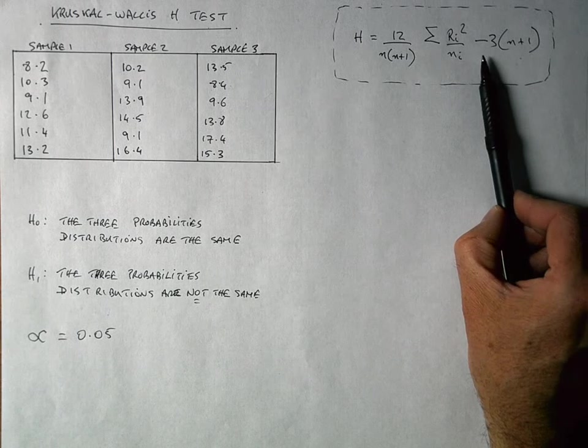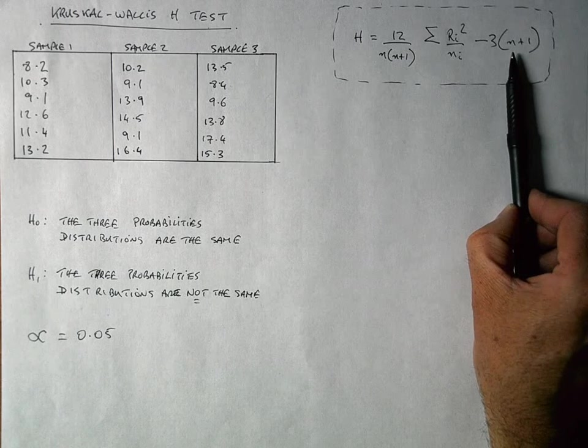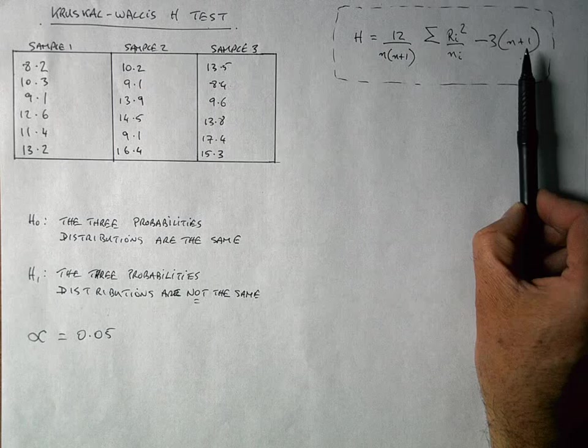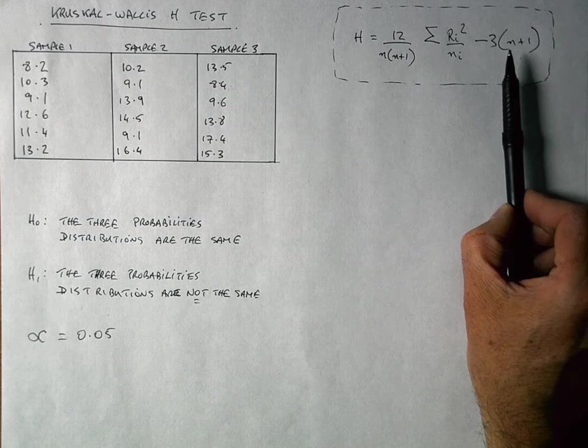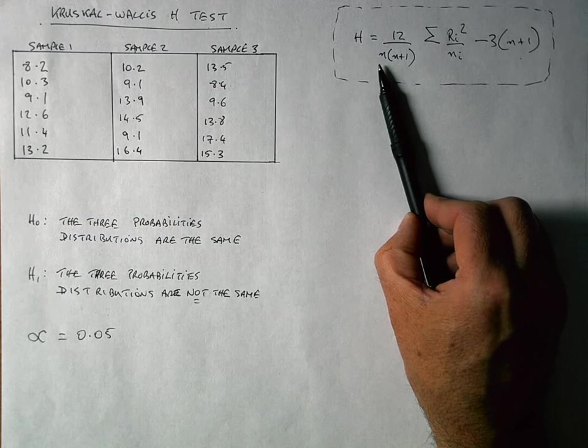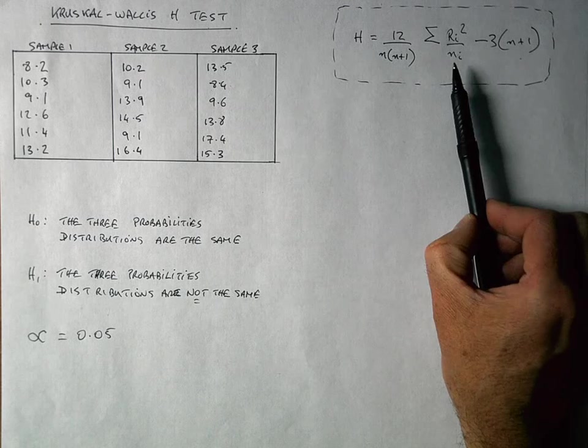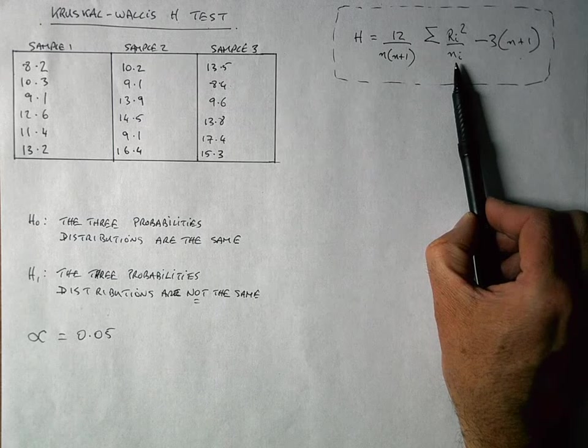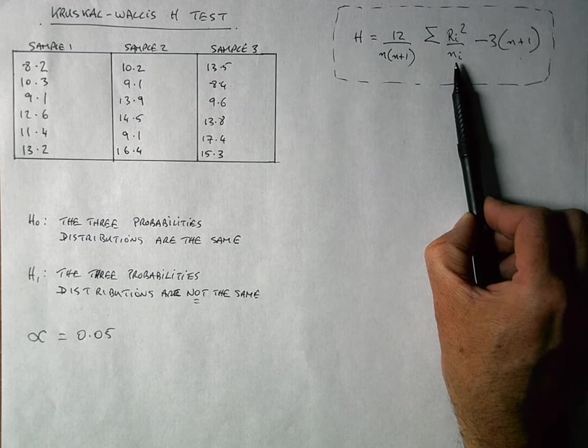And then the final part here is we're going to subtract 3 times N, which again is 18 plus 1. So just be careful here when you're doing this to distinguish N, which is here, here, and here. This is going to be 18 in my example. To distinguish that from Ni, which is the number of values in each group or each sample.